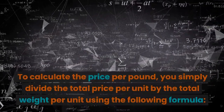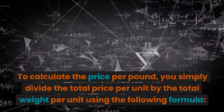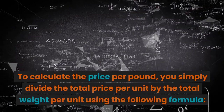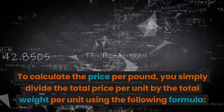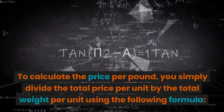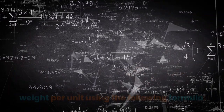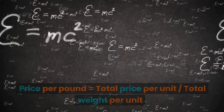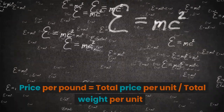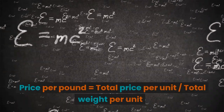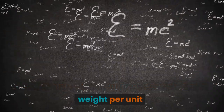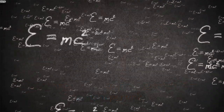To calculate the price per pound, you simply divide the total price per unit by the total weight per unit using the following formula: Price per pound equals total price per unit divided by total weight per unit.